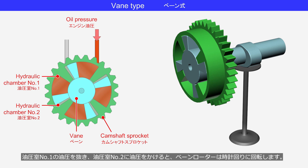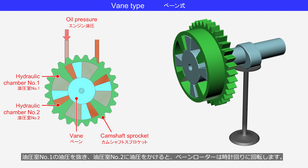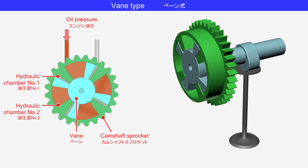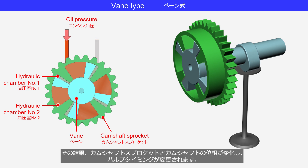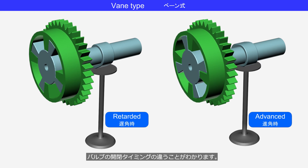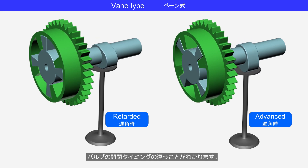When the hydraulic pressure is released from hydraulic chamber number one and applied to hydraulic chamber number two, the vane rotor rotates clockwise. As a result, the phase between the camshaft sprocket and the camshaft is changed, altering the valve timing. You can see that the valve opening and closing timings are different.